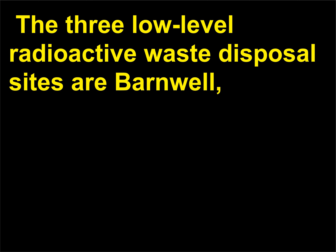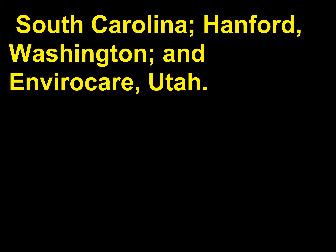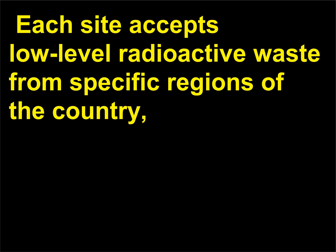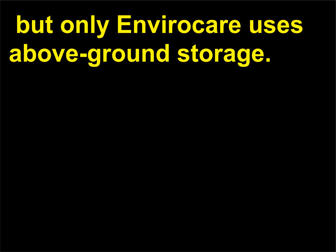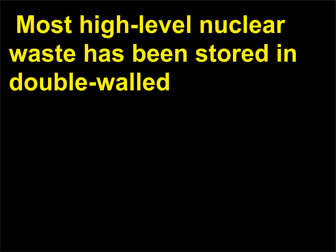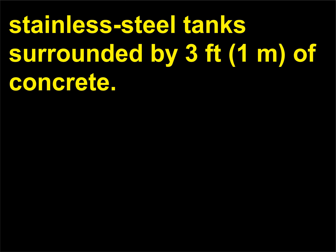The three low-level radioactive waste disposal sites are Barnwell, South Carolina; Hanford, Washington; and EnviroCare, Utah. Each site accepts low-level radioactive waste from specific regions of the country, but only EnviroCare uses above-ground storage. Most high-level nuclear waste has been stored in double-walled stainless-steel tanks surrounded by 3 feet (1 meter) of concrete.